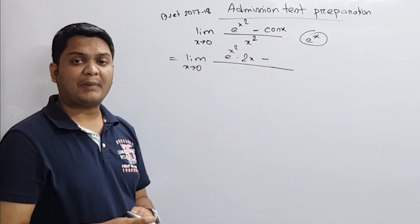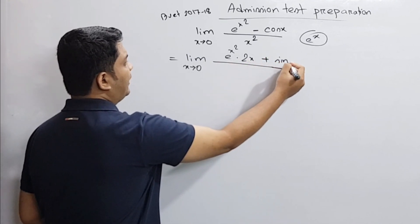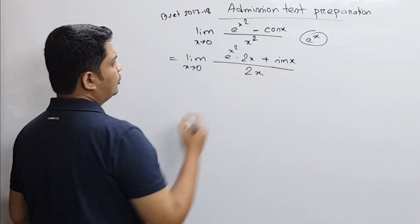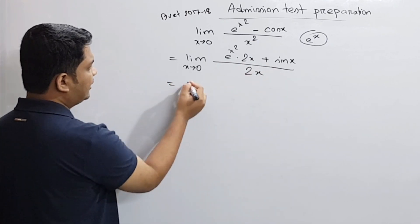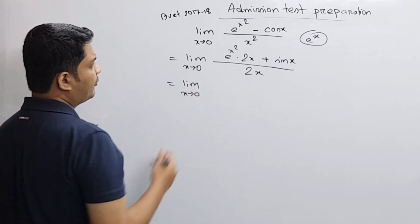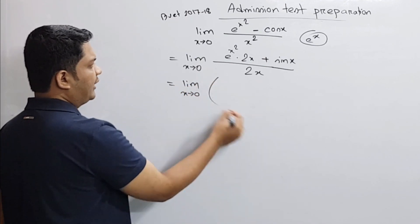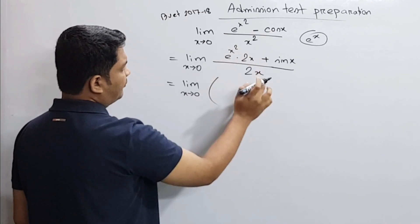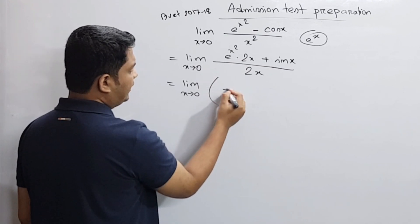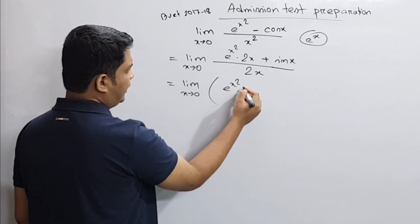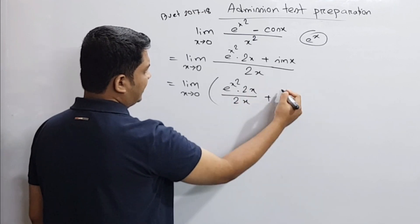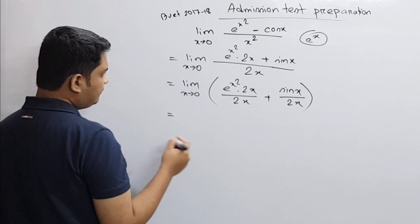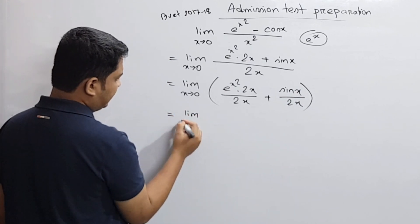cos x — the derivative is sin x — so e minus becomes plus sin x. And x squared — the derivative is 2x. So this number is limit x tends to 0, and we write 2x.